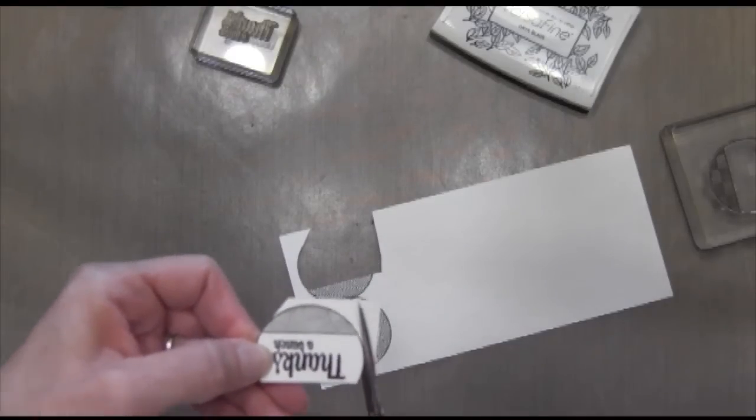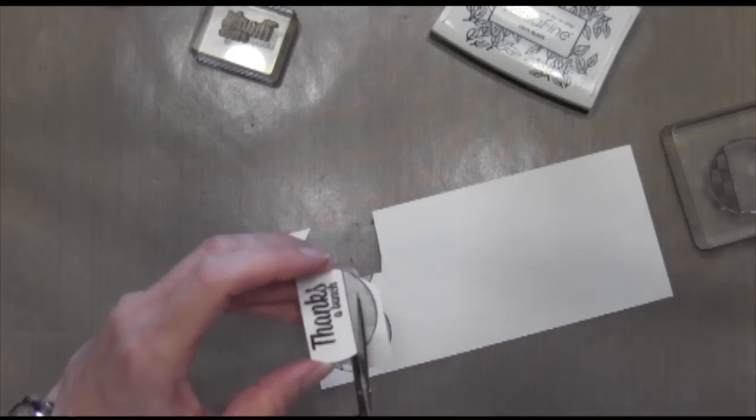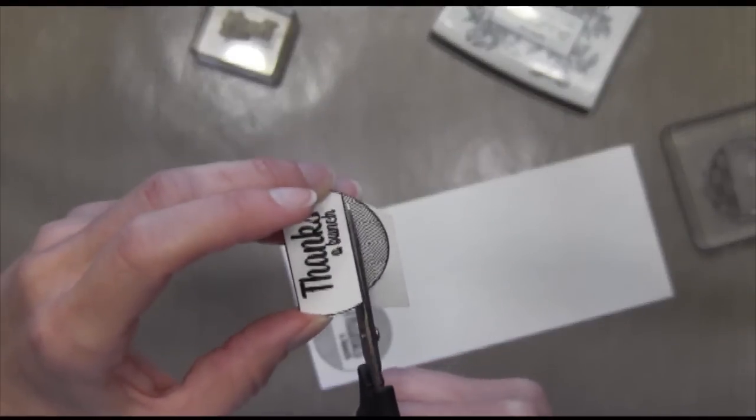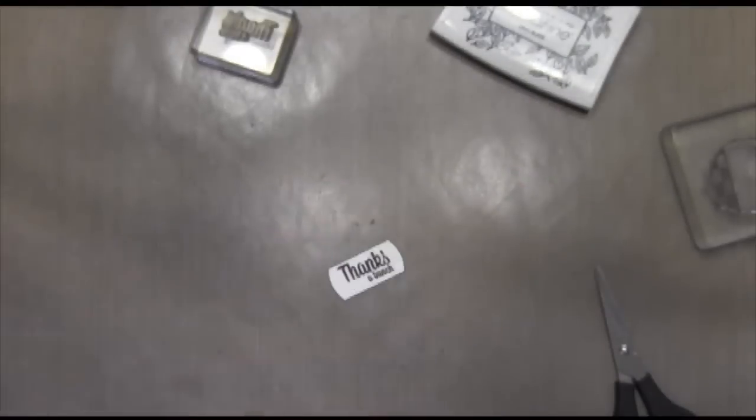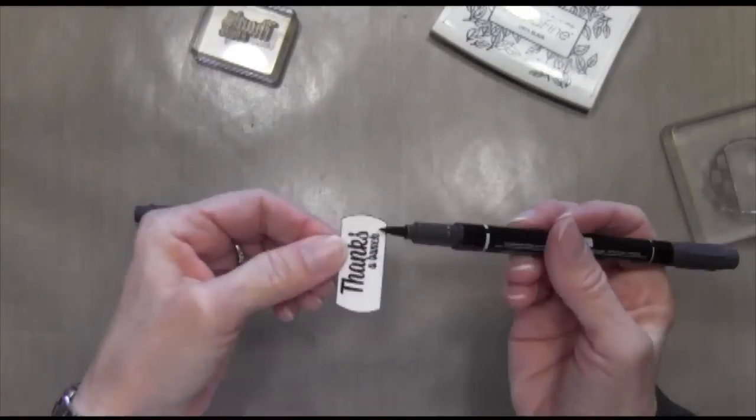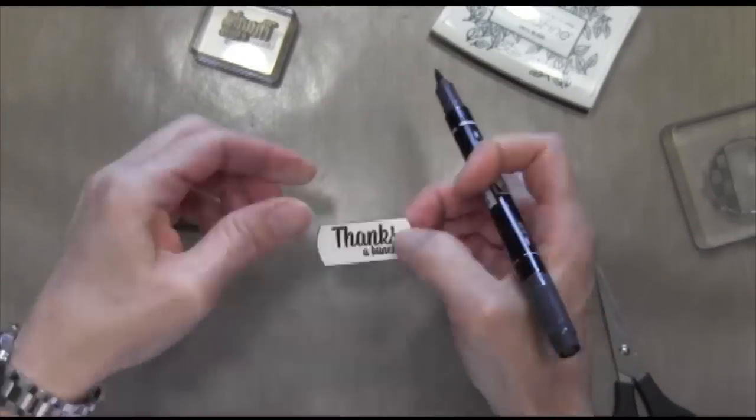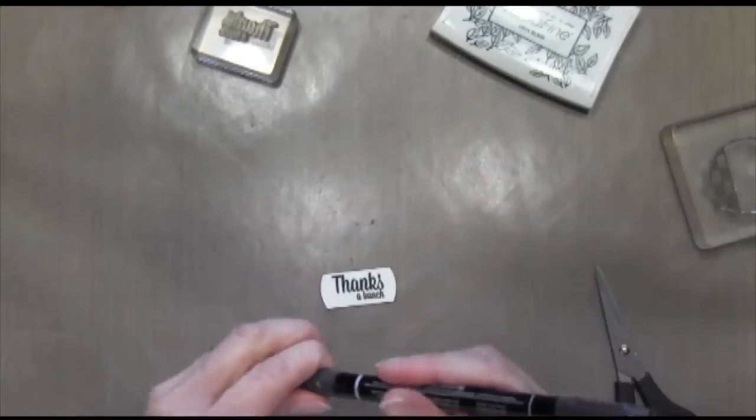I'm going to cut around because I don't want the lines on the edge there, so I just cut out the middle portion. Then I took a marker and inked up the edges just in case I didn't cut it exactly right on that black line.